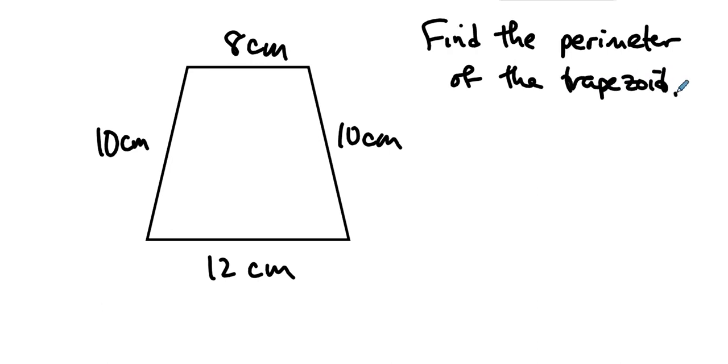Well, what is perimeter? Perimeter is the distance around the object, right? It's a meter distance peri-around. It's the distance around the trapezoid.